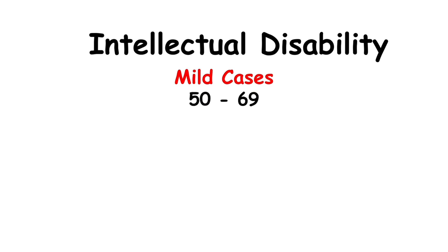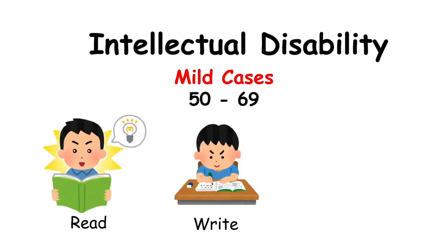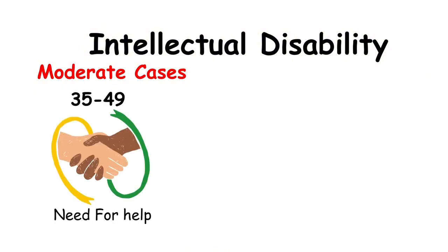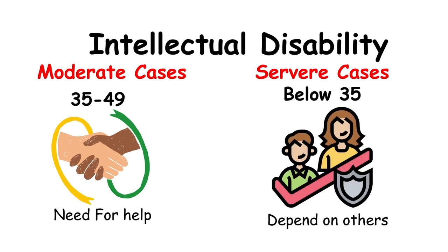People are grouped by level. Mild cases, IQ 50 to 69, can read, write, and do simple jobs. Moderate cases, IQ 35 to 49, need more help with daily tasks. Severe cases, IQ below 35, often depend on others for most activities.